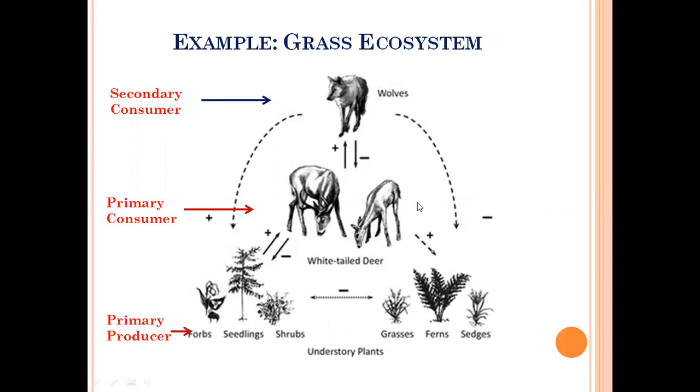Now all these three organisms are interdependent to one another for existence and survival. Now imagine one of the species has been eliminated or removed due to certain environmental factors or human-induced factors. For example, let's say gray wolves population in the grassland ecosystem has declined or has become extinct.